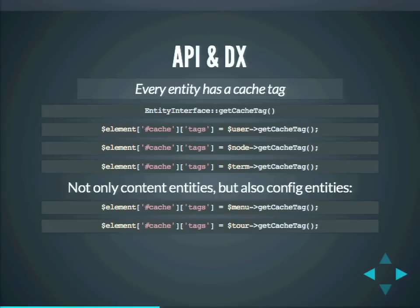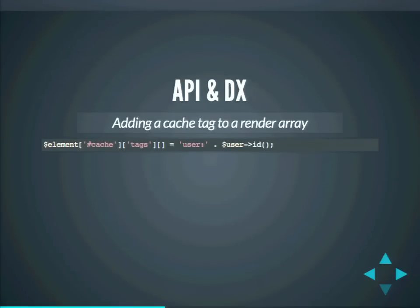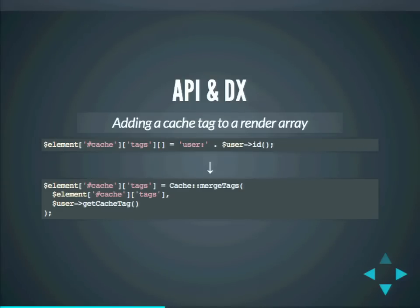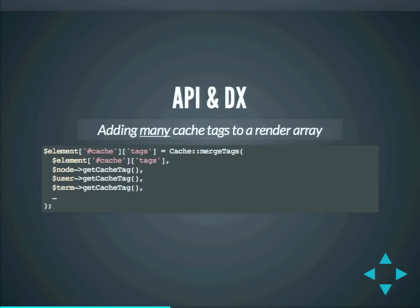getCacheTag returns an array of cache tags, not a single string, because in some cases you might want multiple cache tags. To use this, instead of constructing strings manually, you can call a helper method called mergeTags on the Cache class. Given one set of cache tags and another set of cache tags, it merges them together. A nice side effect is that you can call getCacheTag on a whole bunch of entities and pass them all in — they will all be merged together, just like set merging works. So it's very easy to add many cache tags to a render array.